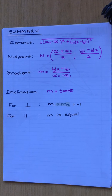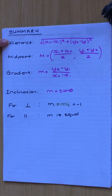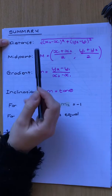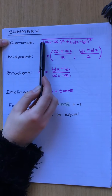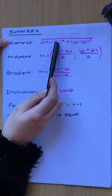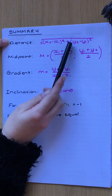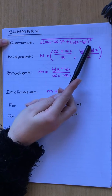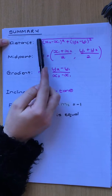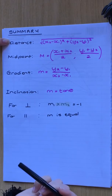I'm going to explain to you what each formula is for. This is your distance formula, and it says x2 minus x1 squared plus y2 minus y1 squared, and then you square root that.